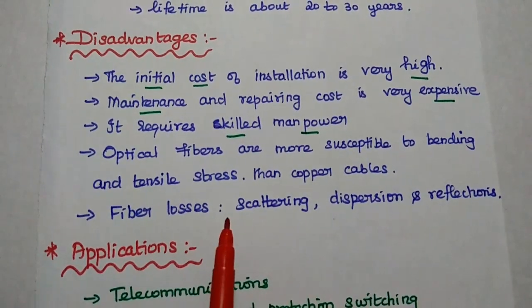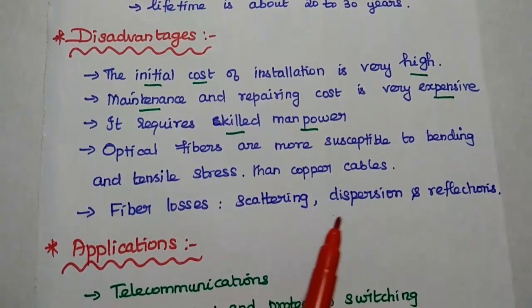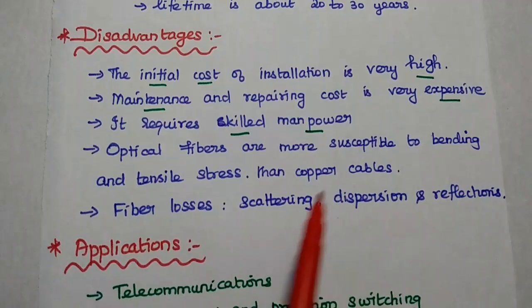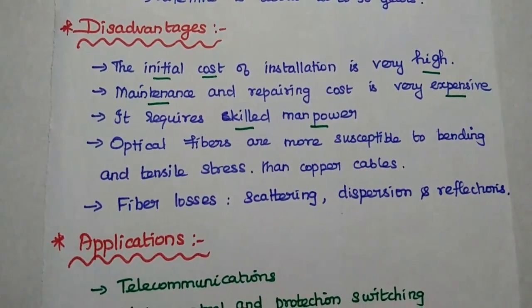Here, it has some losses like scattering, dispersion and reflection. These are the disadvantages of optical fiber system.